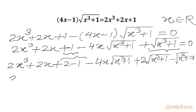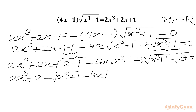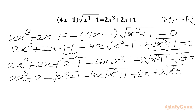Now we have to rearrange our terms in this manner: 2x³ + 2, then we will write our last term √(x³ + 1), then minus 4x√(x³ + 1), then 2√(x³ + 1) - 1 equal to 0.